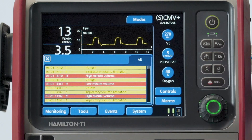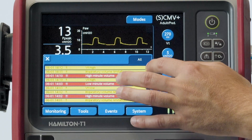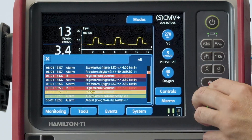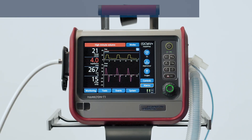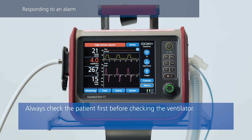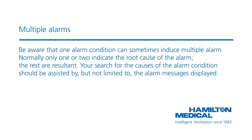Information about alarms is also stored in an event log. Try to identify the main cause of the alarm condition and then remove it. Be aware that one alarm condition can sometimes induce multiple alarms. Normally, only one or two indicate the root cause of the alarm — the rest are resultant.